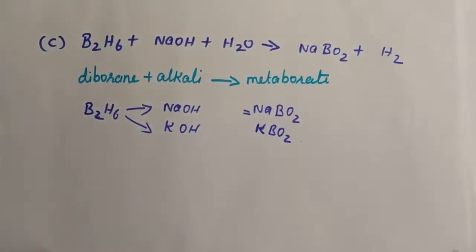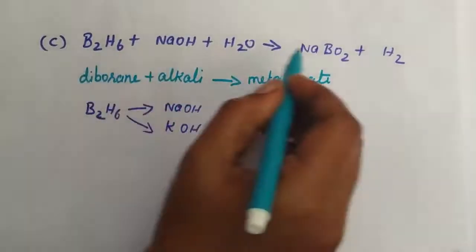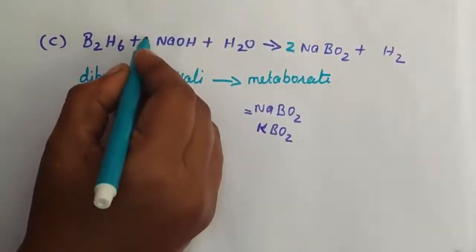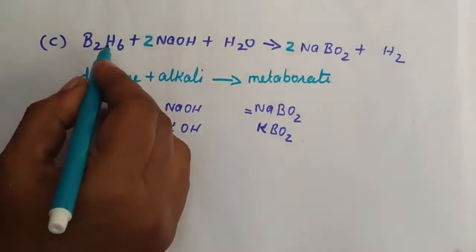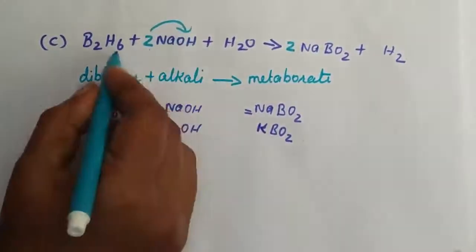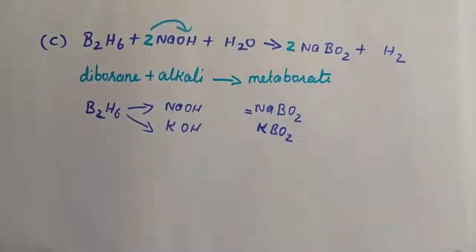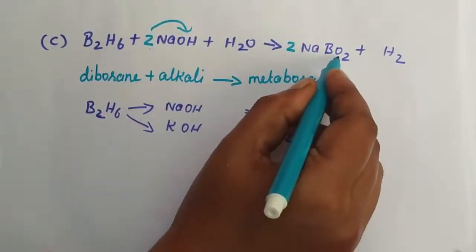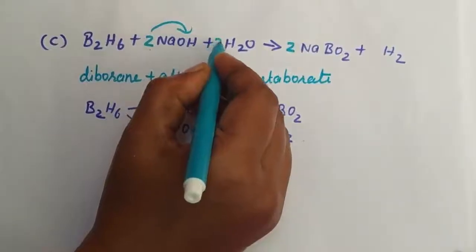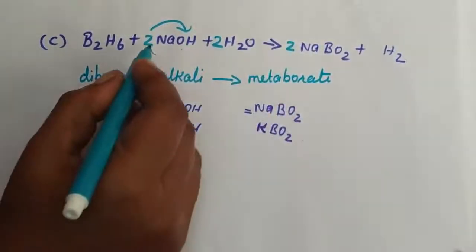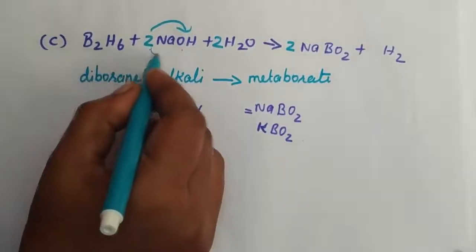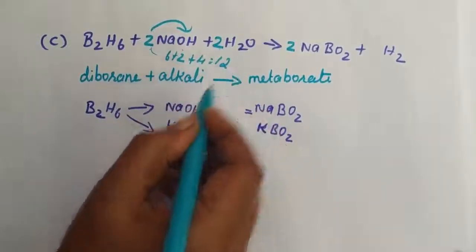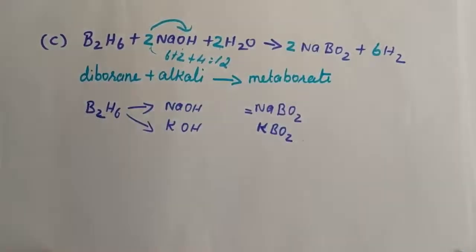Sodium is 2, so it is balanced with 2. Hydrogen is 6, so that gives 2 hydrogen from NaOH; 6 plus 2 is 8, and 8 plus 2 equals 10 hydrogen total. Oxygen: 1 oxygen — this is 2 divided to give 4 total oxygen. So total hydrogen: 6 plus 2 is 8, plus 2 into 2 is 4, giving 12 hydrogen. Balance is confirmed with 6 H2.